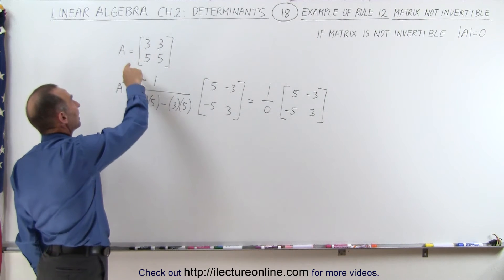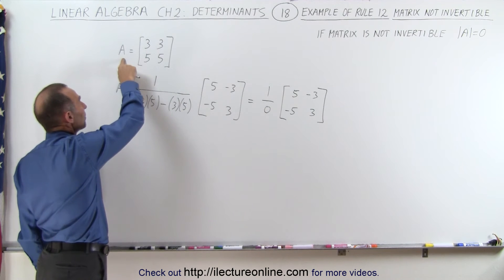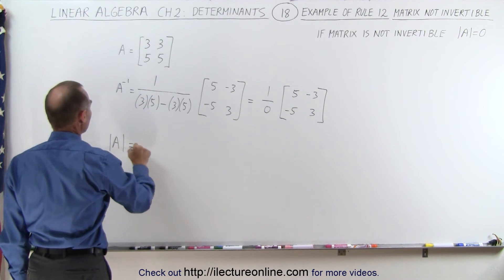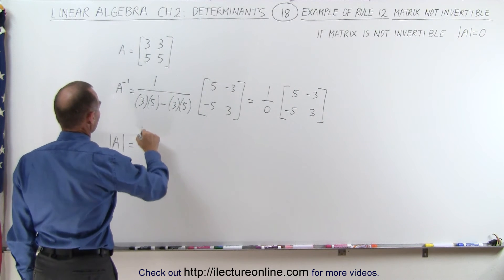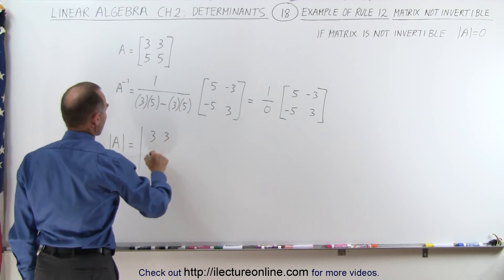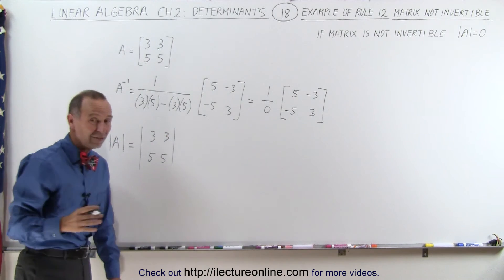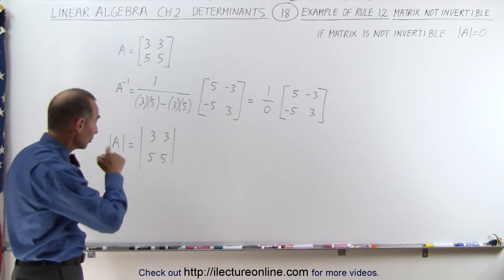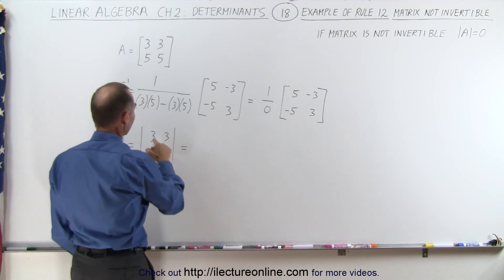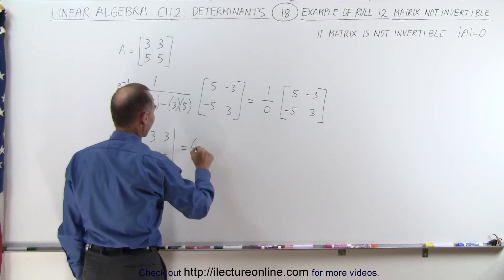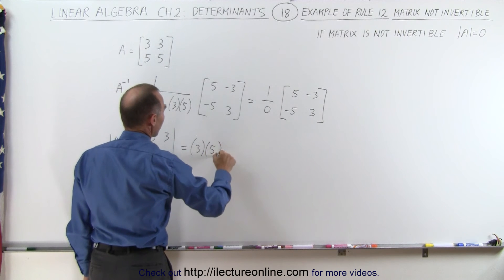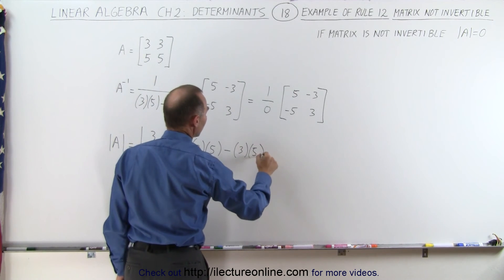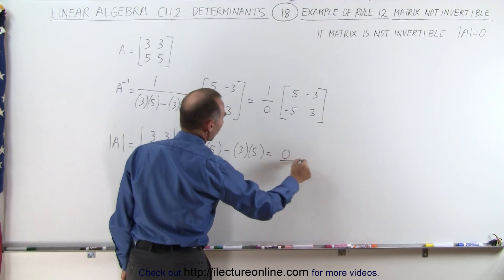If we now try to find the inverse or not the inverse but the determinant of that matrix. So now let's find the determinant of matrix A. This is equal to 3, 3, 5, and 5 and for the very same reason that there was no inverse to the matrix we'll find here that the determinant of this is equal to 0 because it'll be 3 times 5 minus 3 times 5 which means this is 15 minus 15 or 0.